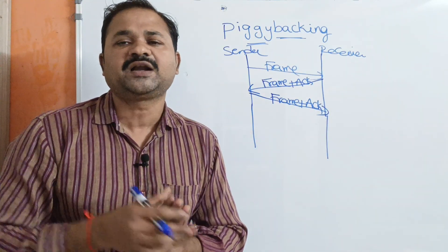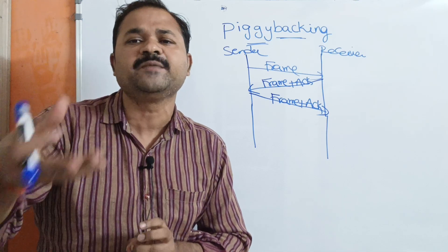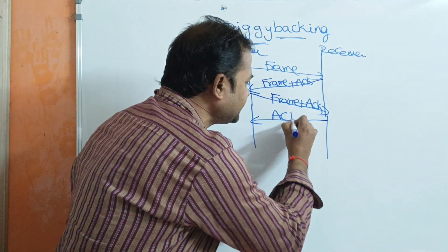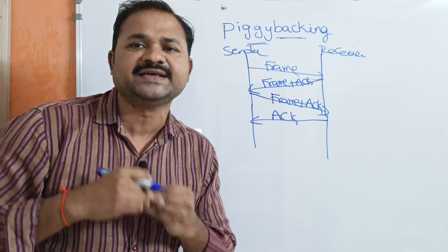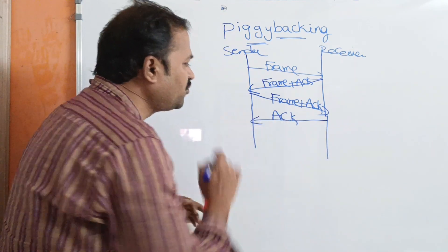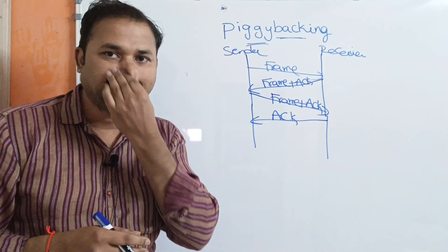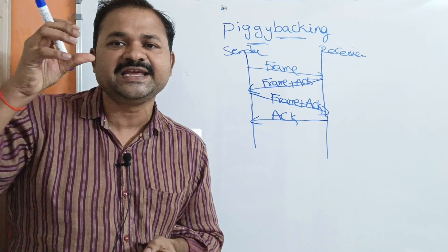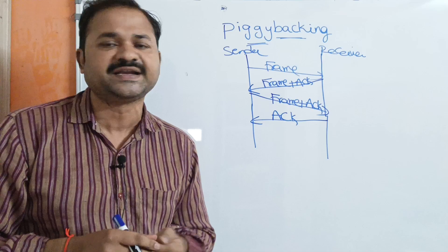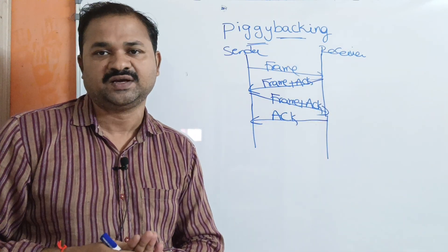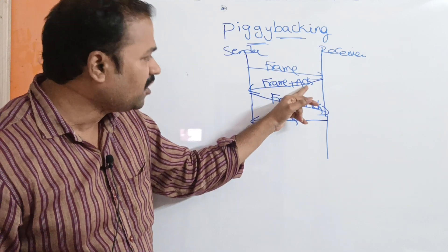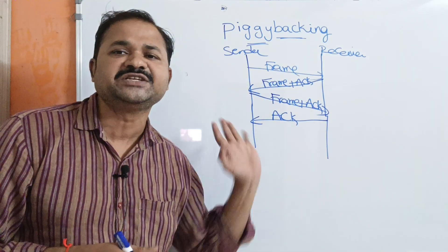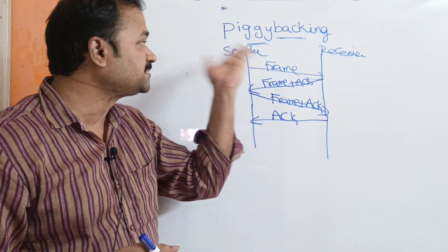Now let us assume the receiver has no frame to be sent. In that case, only the acknowledgement will be sent to the sender, because the receiver has no frame to append it to. So to summarize: piggybacking is a technique of delaying the acknowledgement until the next frame is available, and the acknowledgement is appended to the frame that is to be sent.